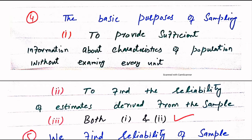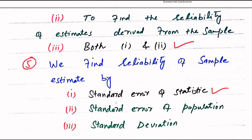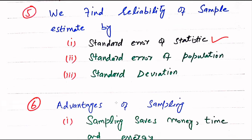These two choices are the basic purpose of sampling. Question number 5. We find reliability of sample estimates by — Standard error of statistics, Standard error of population, or Standard deviation. The right answer is Standard error of statistics, because the term statistic is derived from samples, so we get reliability from Standard error of statistics.